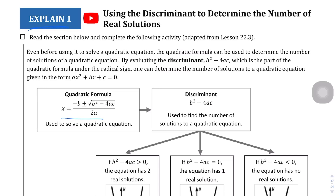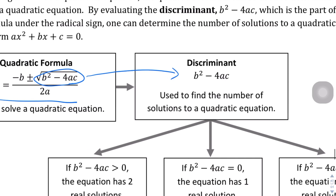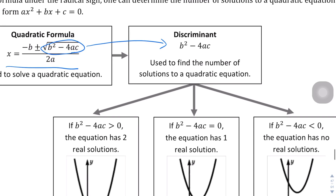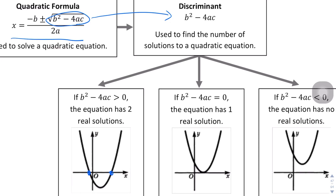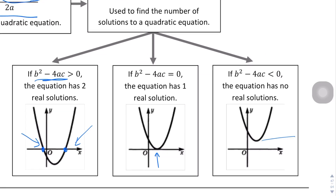When you have the quadratic formula, the inside part — b squared minus 4ac — is called the discriminant. The discriminant gives us a preview of what the solution will look like. If the discriminant is greater than zero, you have two solutions. If it equals zero, you have one solution right at the tip of the parabola. If the discriminant is less than zero, there are no real solutions — later in Algebra 2 you'll learn those have imaginary roots.